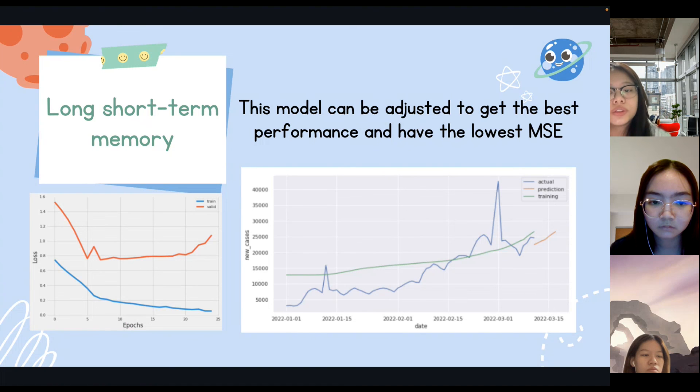The last one is long short-term memory model. The reason that this model can be adjusted to get the best performance is that this model has the lowest MSE, unlike the multiple linear regression and support vector regression.